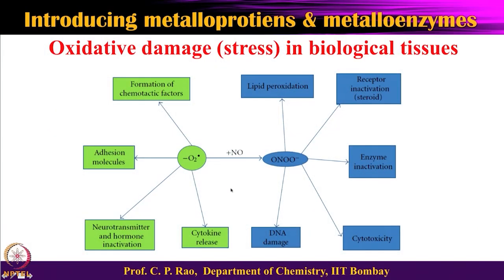In this class, let us look at what kind of damage one would expect from the O2 minus superoxide radical. Oxidative stress is nothing but the formation of oxygen-based radicals and oxygen-based anionic species which react with tissue and damage cells or organs — that is what is referred to as oxidative damage. O2 minus dot, the superoxide radical, can combine with nitrosyl groups and affect lipids, cells, and various components of the biological system, leading to damage of biological tissue.